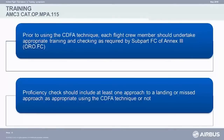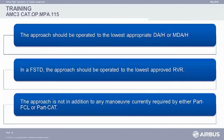What about training? What do we see in training? The regulation acceptable means of compliance says: prior to using the CDFA technique, each flight crew member should undertake appropriate training and checking — not only training, but checking as well. The proficiency check should include — each proficiency check, not skill test — at least one approach done to the landing or missed approach using this technique, so that your pilots are familiar with the technique you promote, let it be the final approach path mode or the CDFA technique. When you do this kind of training, you should do it up to the lowest decision altitude or DH, and if you do it in an FSTD, as well to the lowest approved RVR. It's not easy in the simulator to do this. The approach is part of the proficiency check — you have to train and be competent in doing this.